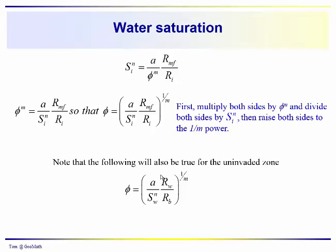And we should also note that the same will be true for the uninvaded zone. We will replace mud filtrate with the resistivity of the water, subscript F, and the ratio of the fluid to the resistivity of the fluid to the whole rock resistivity. So we have these two forms of this relationship here and there. They're going to be different, and the differences between them tell us something about the hydrocarbon saturation.